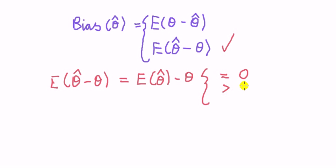If it is bigger than zero, it means that on average your estimator is giving you a higher value than the true parameter. In other words, it's off and it's bigger than the true value, right? That's the mistake you're making.